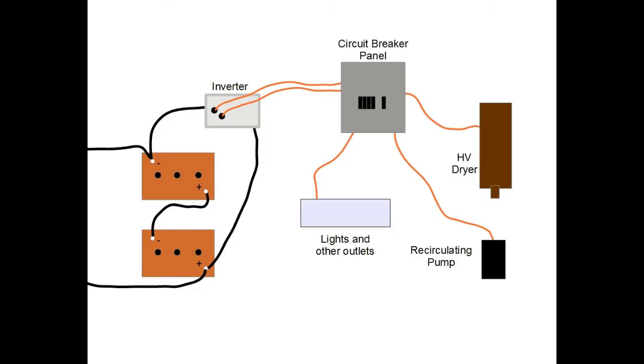We'll be replacing it with a pure sine wave inverter at some point, although it has not been giving us any issues yet. The power comes from the inverter to a circuit breaker panel to distribute to the devices in the mobile salon, including the fluorescent lights, the high velocity dryer, the power strip for the clippers, and the recirculating pump for the grooming tub.